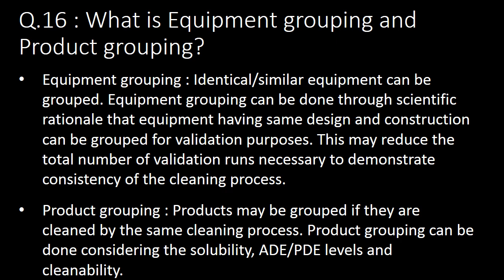The next question: what is equipment grouping and product grouping? In equipment grouping, identical or similar equipment can be grouped. This can be done through scientific rationale — equipment having the same design and construction can be grouped for validation purposes, reducing the total number of validation runs necessary to demonstrate consistency. In product grouping, products may be grouped if they are cleaned by the same cleaning process, considering solubility, ADE or PDE levels, and cleanability.